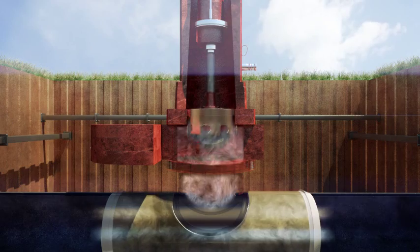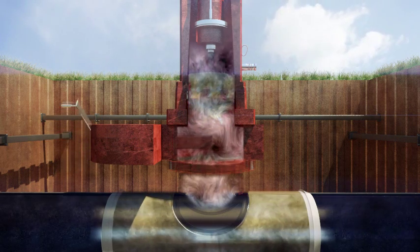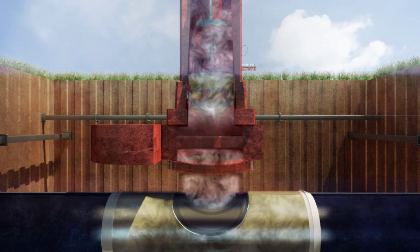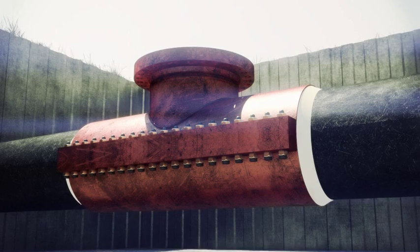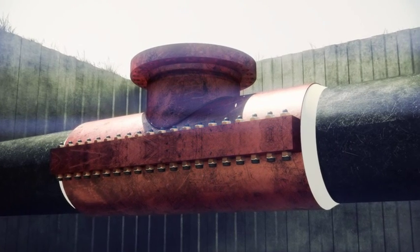The cutter is retracted back into the drill housing and the valve closed to isolate the pipeline product. Pressure is vented from the drilling machine to complete the T connection.